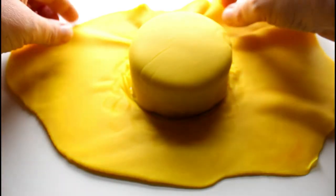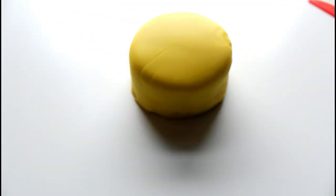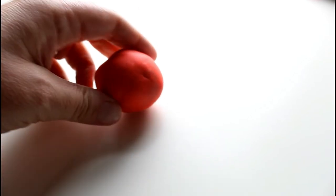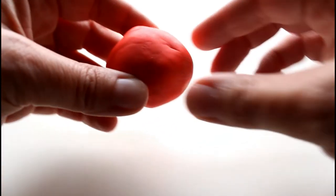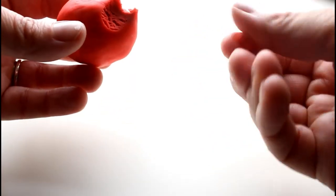Once we cut around the edges we can pull off the excess play-doh. Now it's time to make some decorations for our cake. We're gonna use this hot pink orangish play-doh to make a decoration, so we're gonna pinch a little piece off and make little balls.